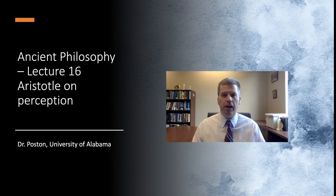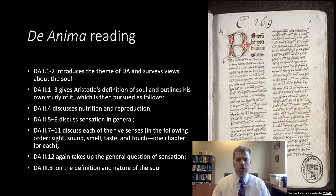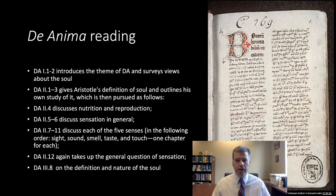Let's go ahead and jump in and talk about an outline of De Anima. I sent you earlier the reading from De Anima. We're going to be reading chapters 1 and 2 of book 1 and then the entirety of chapter 2, and then a section of book 3. In books 1 and 2 of De Anima, Aristotle is introducing the theme and he surveys some views about the soul. Remember that De Anima is translated 'On the Soul.' In De Anima book 2, we get a more overview presentation of Aristotle's account of psychology — Aristotle gives a definition of the soul, outlines his study of it, and then tells us how he's going to pursue this study. That's found in De Anima book 2, chapters 1 through 3.